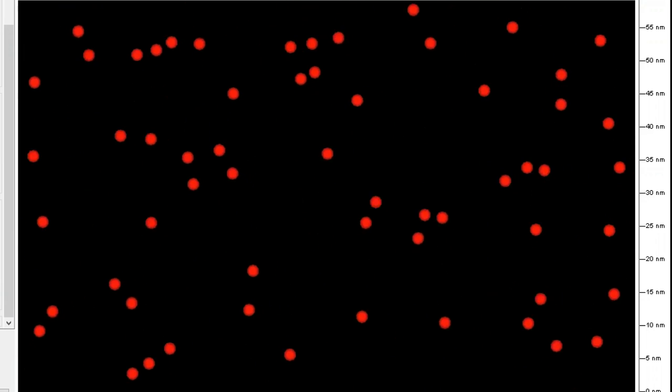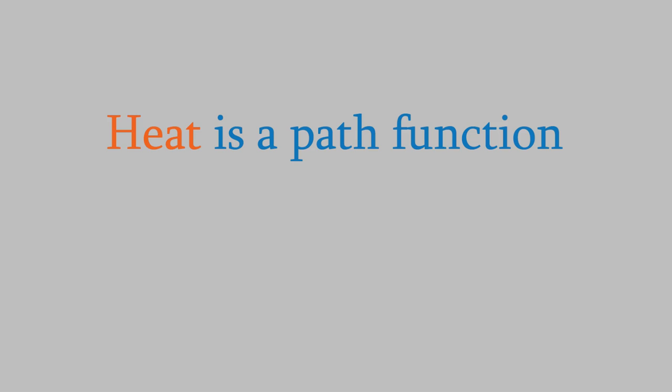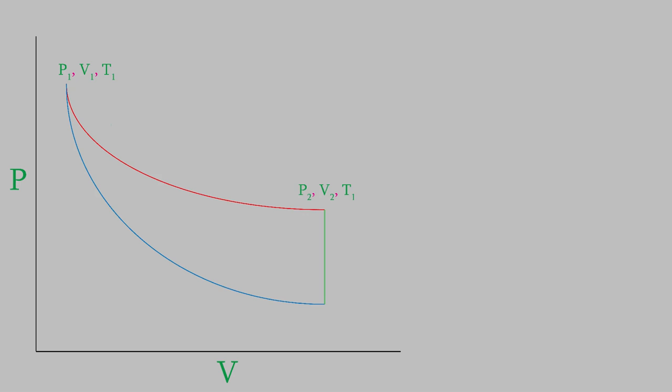Back in video 17, we saw that heat is a path function. In other words, the change in heat depends on the method we use to get from the initial state to the final state. For example, in that video we saw this diagram, and we saw that we could get from the initial state to the final state via an isothermal path. When we did, we saw that the heat change was equal to nRT times the logarithm of V2 over V1.